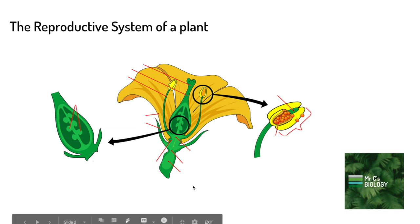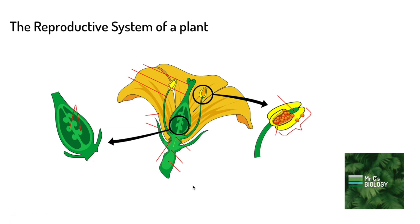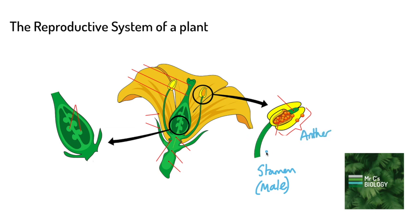In a plant we have both male and female parts of the flower. This part over here is the male part and it's called the stamen. The section at the top is called the anther and the section at the bottom is called the filament.